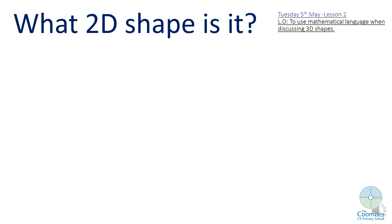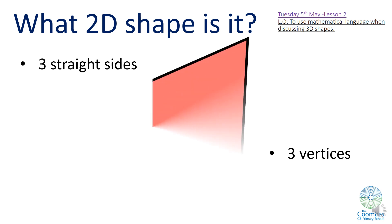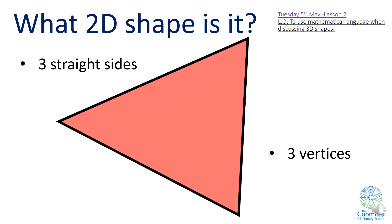Next shape then. I wonder what shape this is going to be. This shape has three straight sides and three vertices. What shape do you think it could be? Fantastic, it is a triangle. Brilliant, well done.